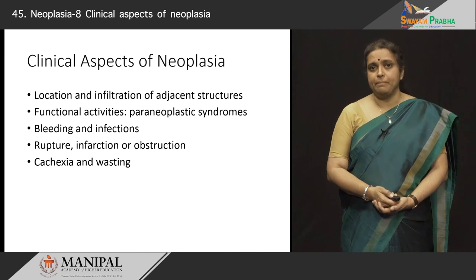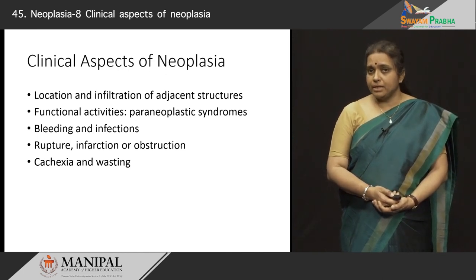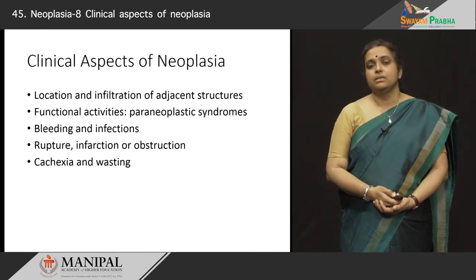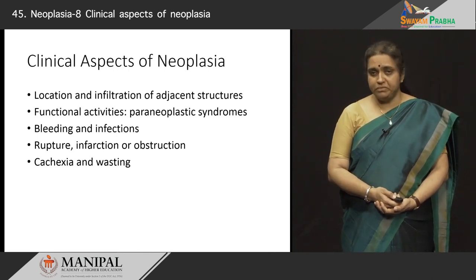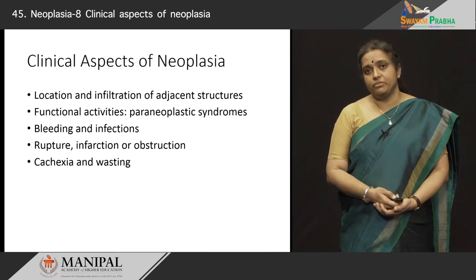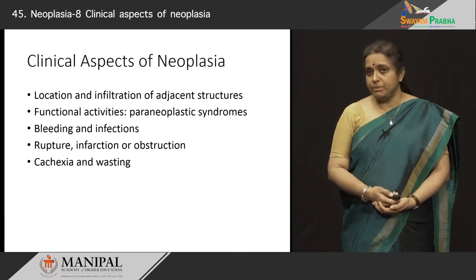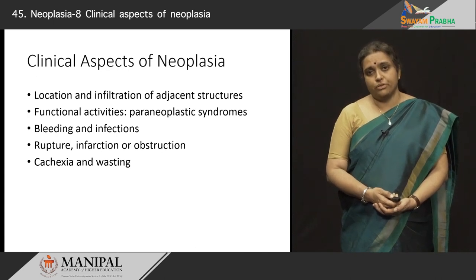For example, a pituitary adenoma — it is only a benign tumor, but it can impinge upon very important structures and cause all kinds of problems. A small carcinoma in the bile duct may be less than 1 centimeter, but since it can obstruct the bile duct, it can cause huge amounts of problems for the patients like obstructive jaundice and so on. So this property of cancer — its ability to infiltrate adjacent structures and its location — causes a lot of problems.